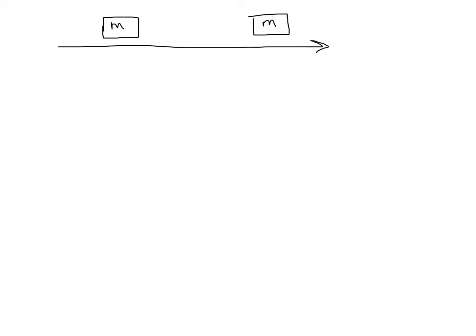So how do you calculate the center of mass? We know intuitively that the center of mass is more or less like the balance point. Suppose you have two masses of equal mass M, and we want to know the center of mass. Say mass 1 is at position 1 and mass 2 is at position 7. We know the balance point — the center of mass — will have to be right in the middle at 4.